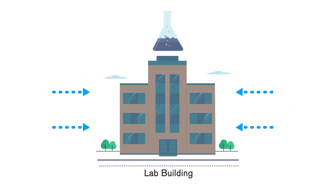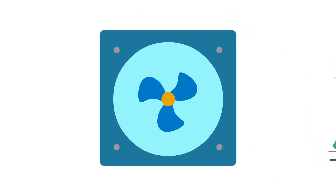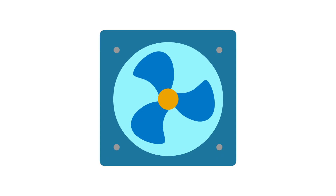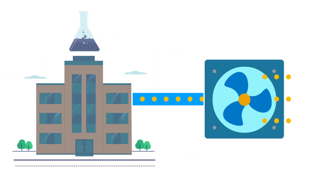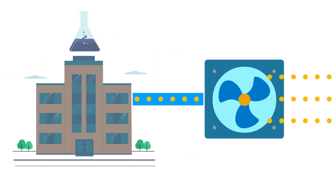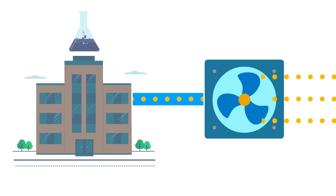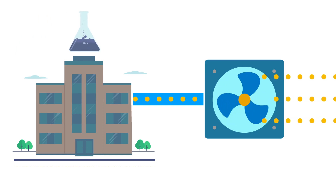To date, all the energy-saving efforts have been focused on the supply of air into the building, but the exhaust ventilation has been ignored until now. Exhaust fans are critical to your lab's safety — they provide dilution for any contaminants in your lab's exhaust air and ensure there is no re-entrainment into the supply air intakes.